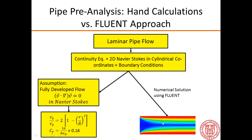In this slide, we situate the hand calculation approach versus the Fluent approach. We have a physical problem and our mathematical model, which is continuity plus 2D Navier-Stokes in cylindrical coordinates plus boundary conditions. We can solve those equations directly using Fluent, which does a numerical solution, and then we get the velocity field and pressure field.